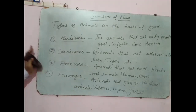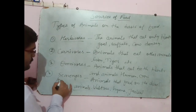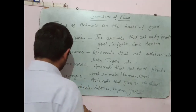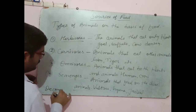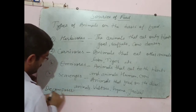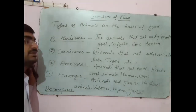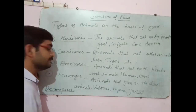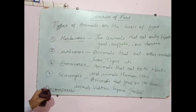These are the types of animals on the basis of their eating habits. Or we can also call them decomposers. Decomposers are also there, which convert dead animals into soil — like bacteria and fungi. So bacteria and fungi are the decomposers.